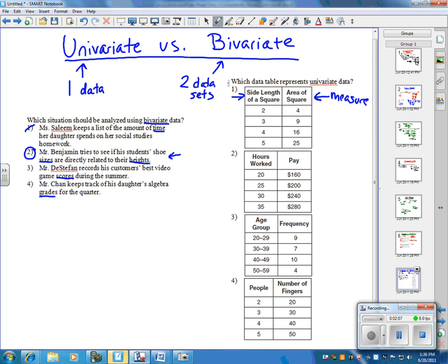So you can measure the area and side. Now, hours worked and your pay, again, both measurable. So answers one and two can't be right because they're both bivariate.